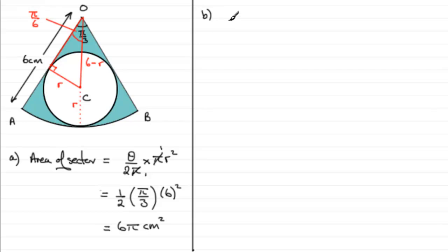So that's our starting point. By trigonometry, you can get that radius by saying the sine of π/6 radians equals the opposite side r divided by the hypotenuse, which is 6 minus r. Now, the sine